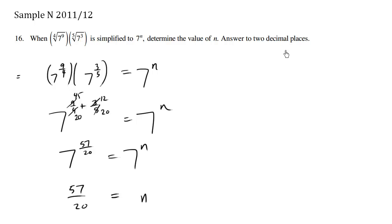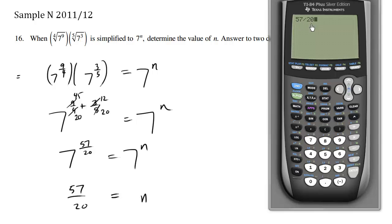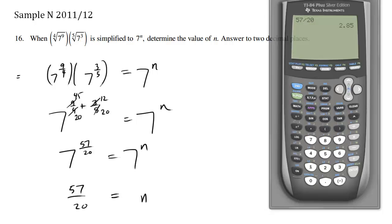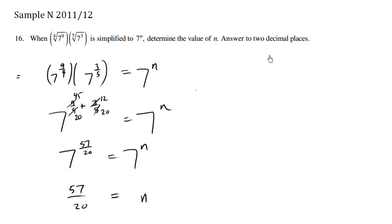In order to answer two decimal places, we're simply going to use our calculator. 57 divided by 20 equals 2.85. So we have the answer, two decimal places is 2.85.